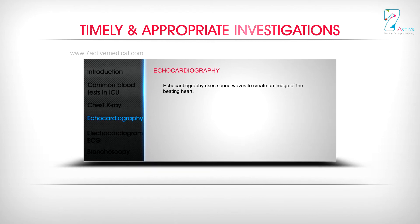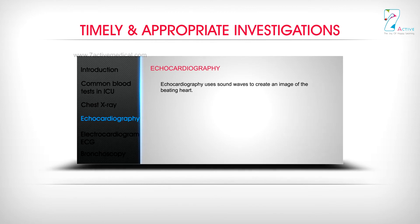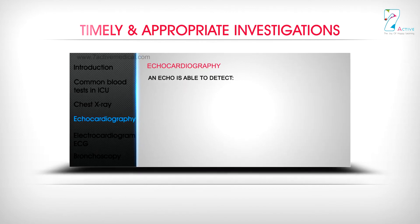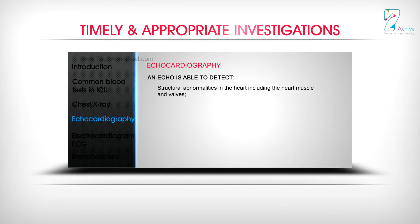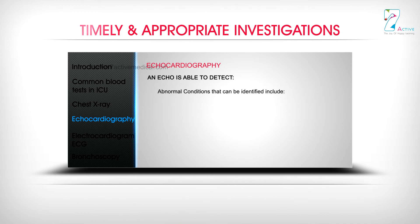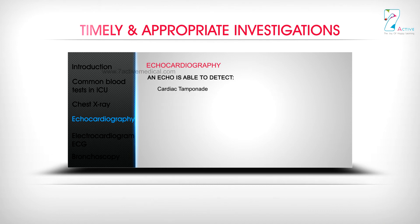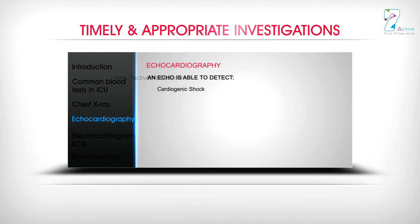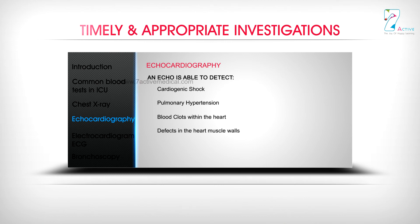Echocardiography: Echocardiography uses sound waves to create an image of the beating heart. An echo is able to detect structural abnormalities in the heart including the heart muscles and valves, blood flow abnormalities, cardiac output, volume of blood pumped by the heart, and volume of blood in the heart. Abnormal conditions that can be identified include heart failure, heart attack, cardiomyopathy, cardiac tamponade, aortic valve abnormalities, mitral valve problems, pericarditis, cardiogenic shock, pulmonary hypertension, blood clots within the heart, and defects in the heart muscle walls.